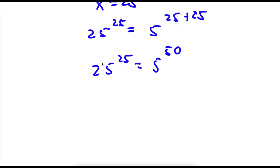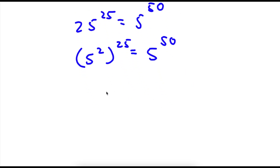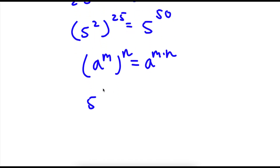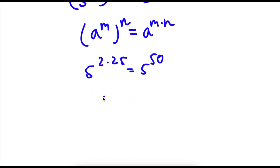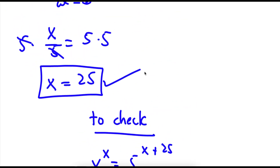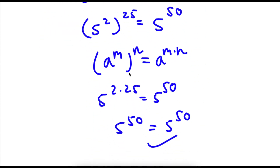To simplify, 25 is the same thing as 5 squared. So now I have 5 squared to the power of 25 is equal to 5 to the power of 50. If I have something in the form a to the power of m to the power of n, this is equal to a to the power of m times n. So 5 to the power of 2 to the power of 25 equals 5 to the power of 2 times 25, which is 5 to the power of 50. So I have 5 to the power of 50 is equal to 5 to the power of 50. Because this is right, we know our solution is right as well. So now it's time for our bonus problem.